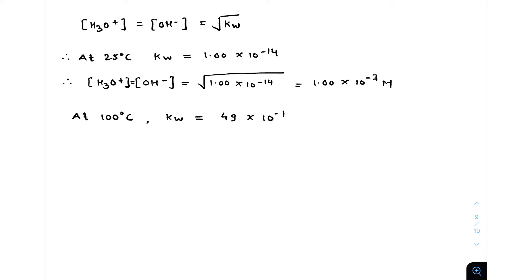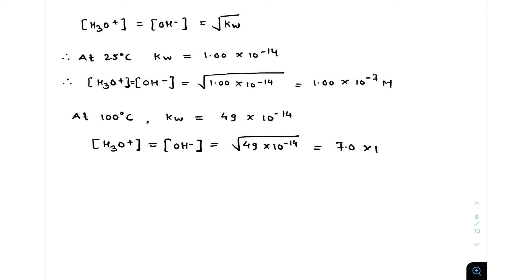At 100°C, Kw = 49 × 10⁻¹⁴. So [H₃O⁺] = [OH⁻] = √(49 × 10⁻¹⁴) = 7.0 × 10⁻⁷ molar. In summary: at 25°C the hydronium and hydroxide ion concentrations are 1.00 × 10⁻⁷ M, and at 100°C they are 7.0 × 10⁻⁷ M.